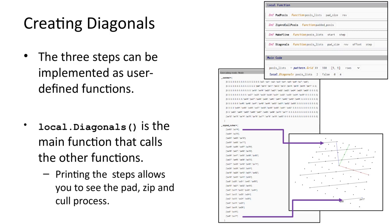The first function is for adding the padding to the list. The second function for zipping and culling the lists. The third function for generating polylines. And the fourth function generates diagonals by calling the other three functions.